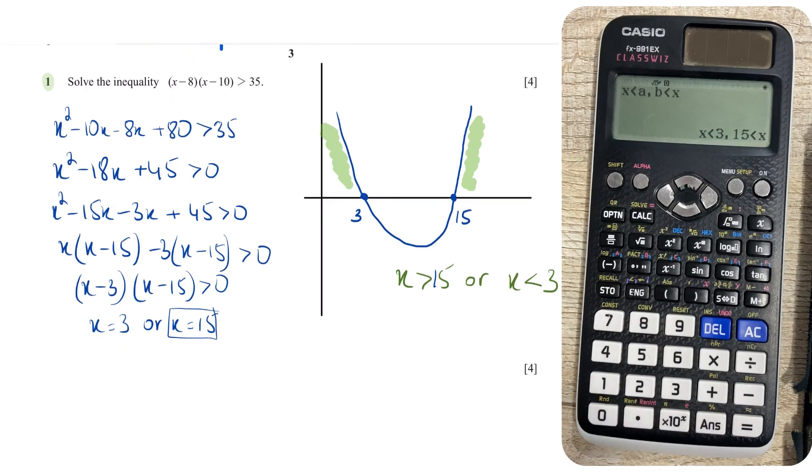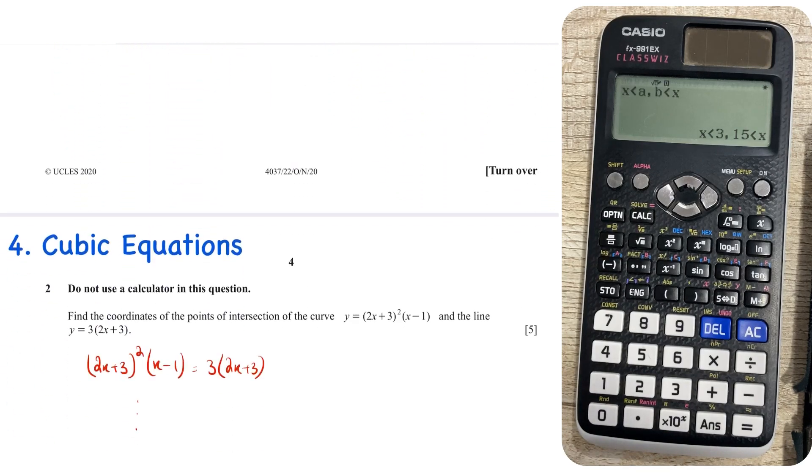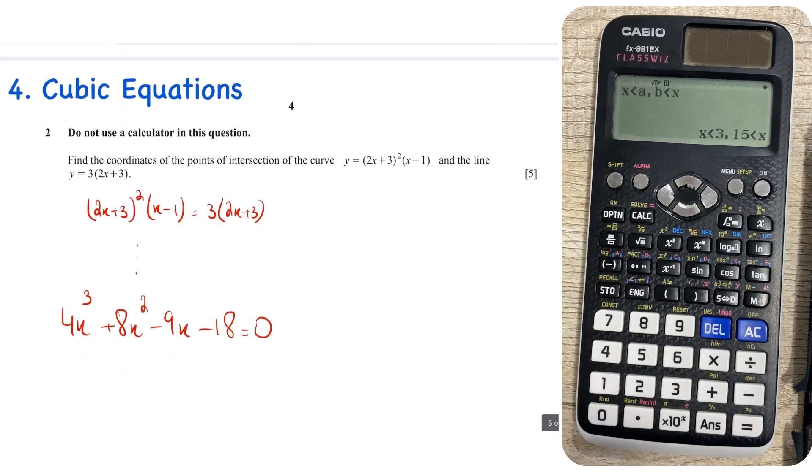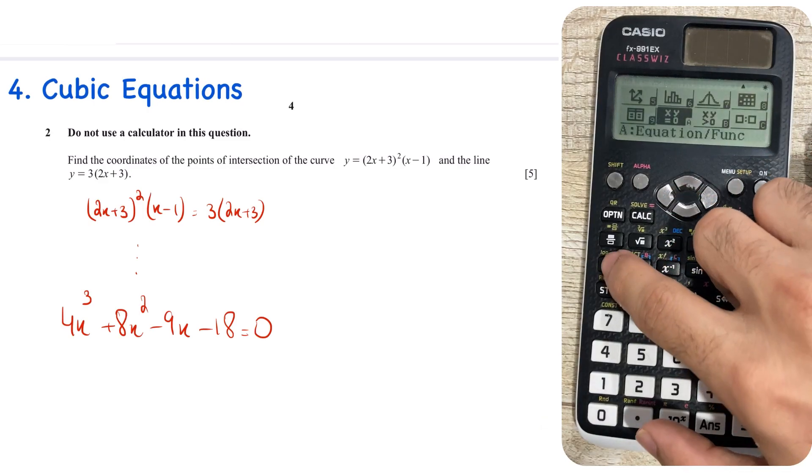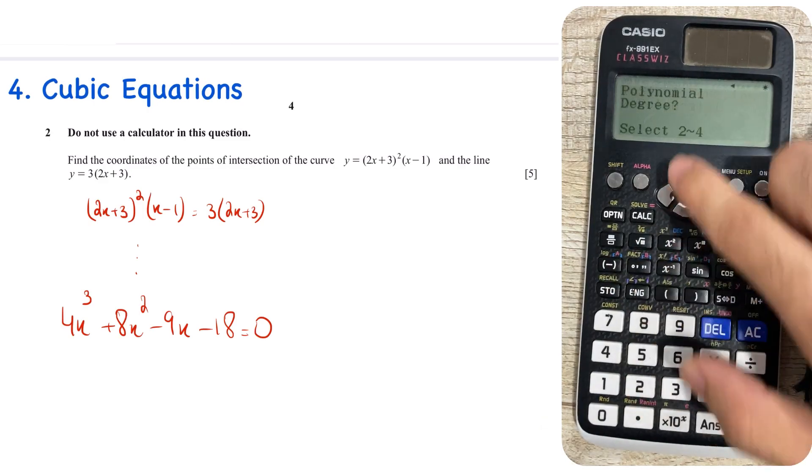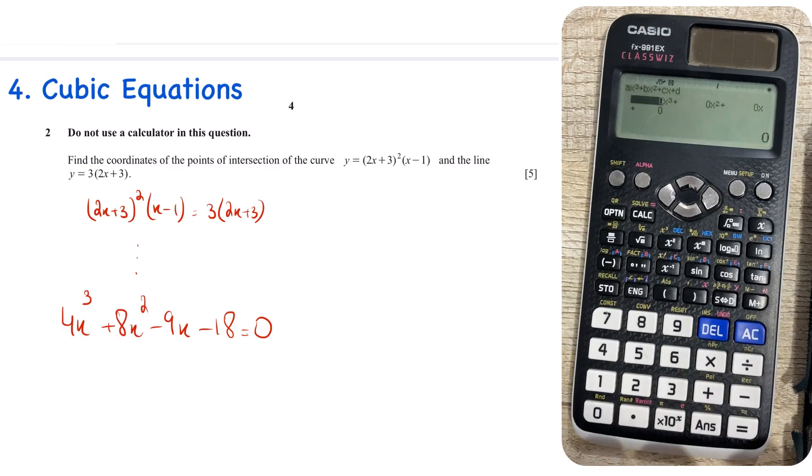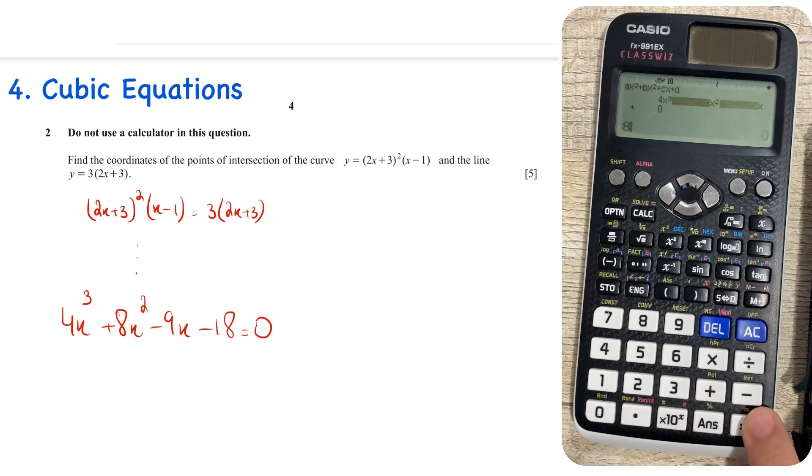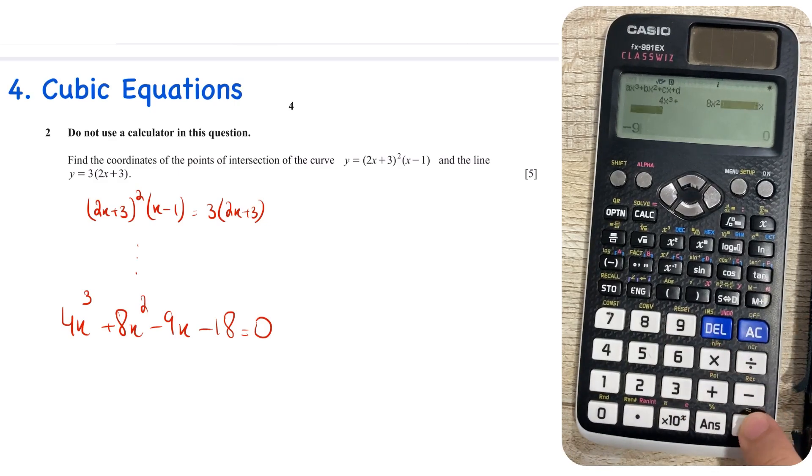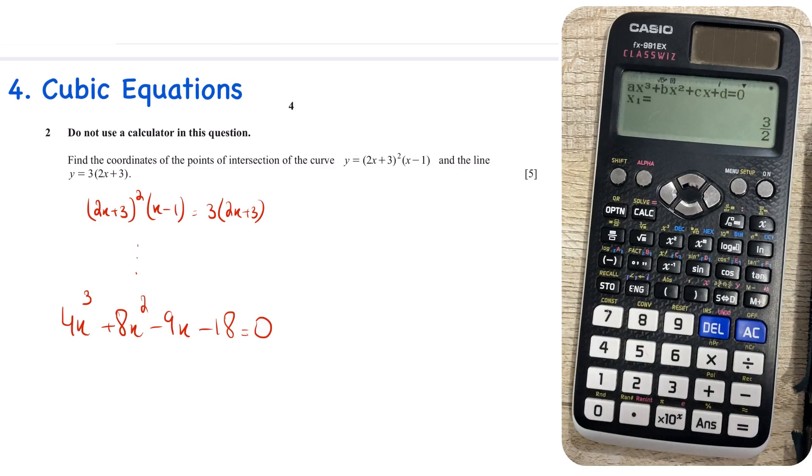And yeah, by the way, if you were thinking that this was planned, this was not planned, I've just realized that I made an error. Anyway, now you have cubic equations, again, also very useful. So you press menu, you head over to equation, that's A, you go to polynomial, and since this is a third degree polynomial, so we press 3. Now coefficient of x cubed is 4, the coefficient of x squared is 8, coefficient of x is minus 9, and then the constant minus 18. Press equals again, wait for the magic, so x is equal to 3 upon 2. Now remember,